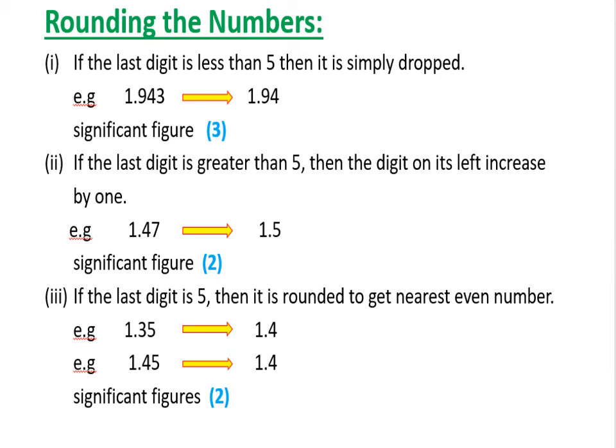Second rounding rule: if the last digit is greater than 5, the digit to its left increases by 1. For example, 1.47 — since 7 is greater than 5, the 4 increases by 1 to give 1.5. The result has 2 significant figures.